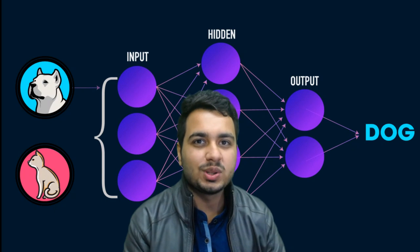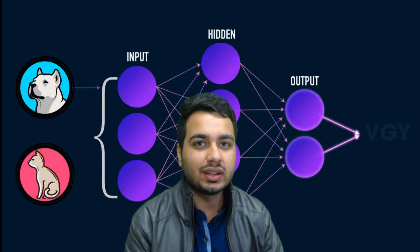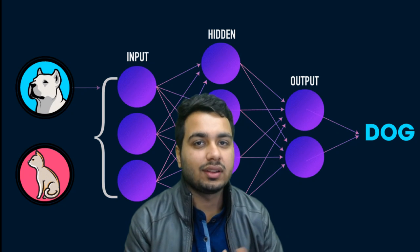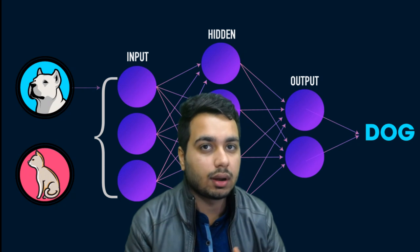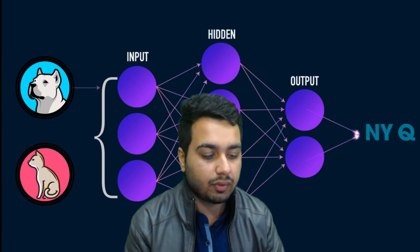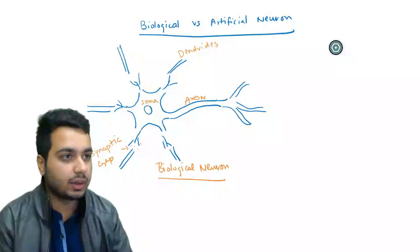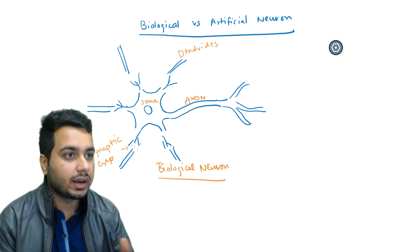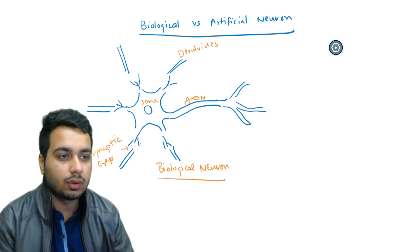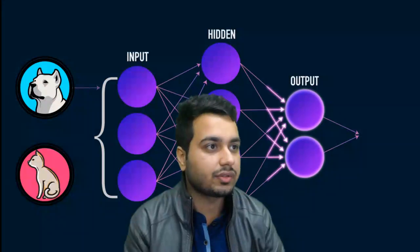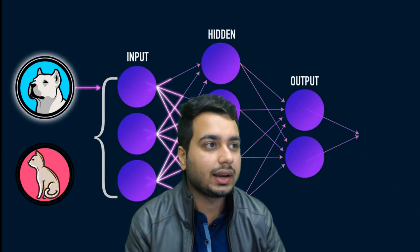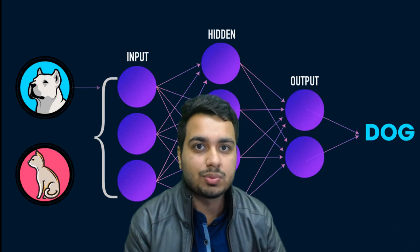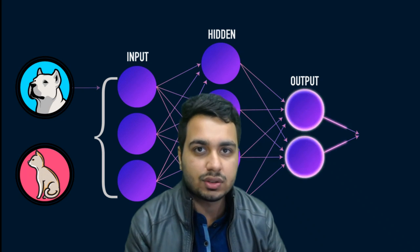Hello everyone, welcome to this video series on neural networks. In this video we are going to understand how the idea of neural networks is inspired from the working of a human brain. We will also talk about the similarities between a biological neuron and an artificial neuron. The basic unit of a neural network is a neuron, and we would be building a network that is able to do various tasks like predicting, language modeling, classifying images, and a lot more.